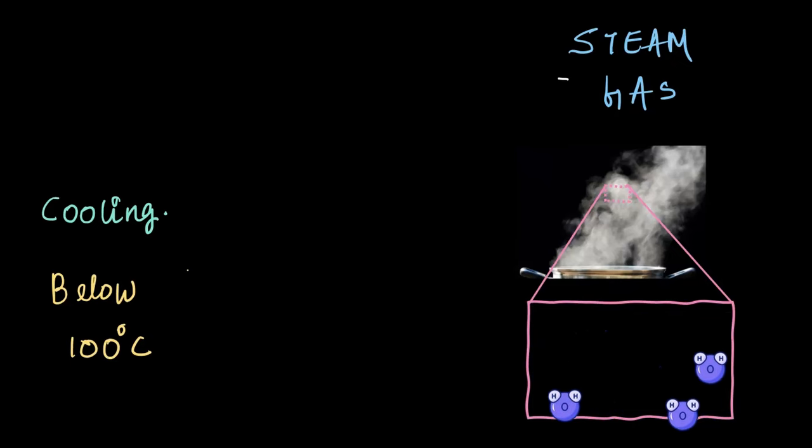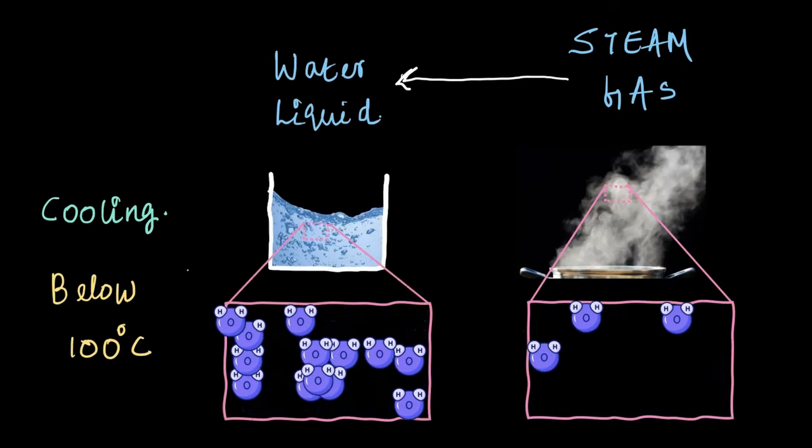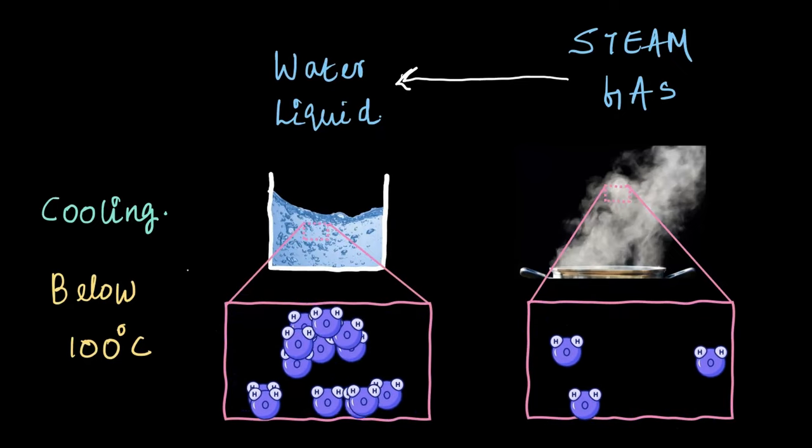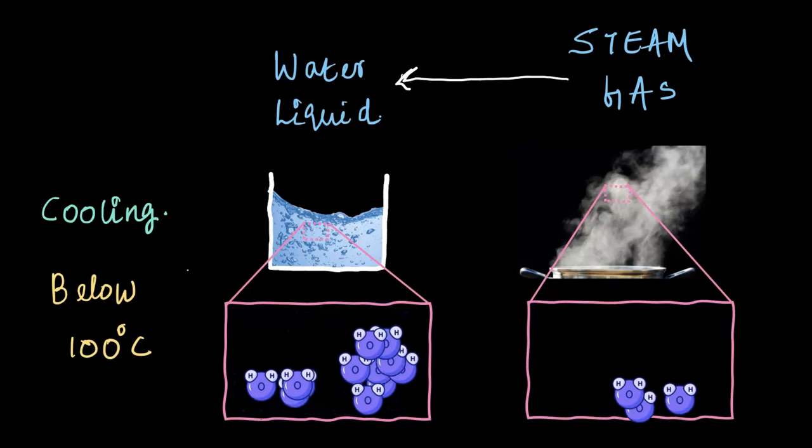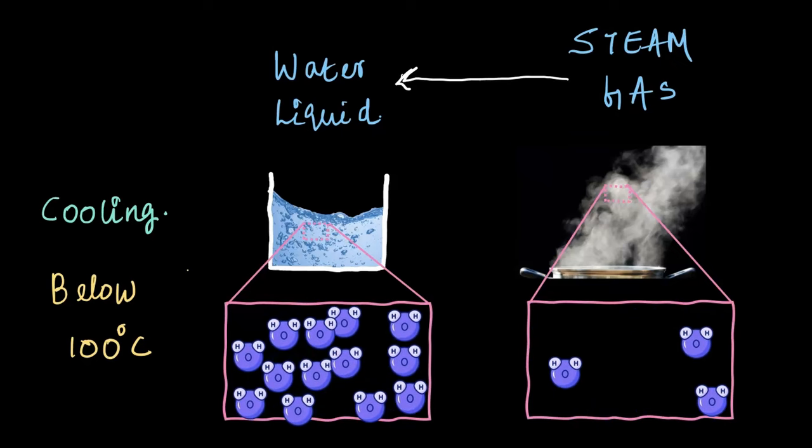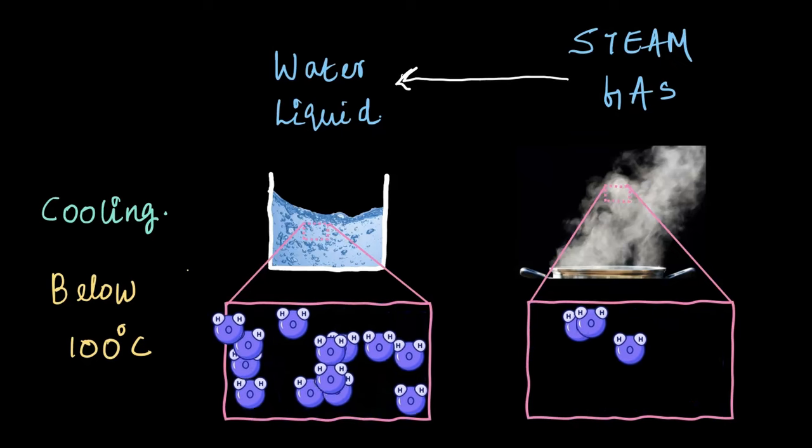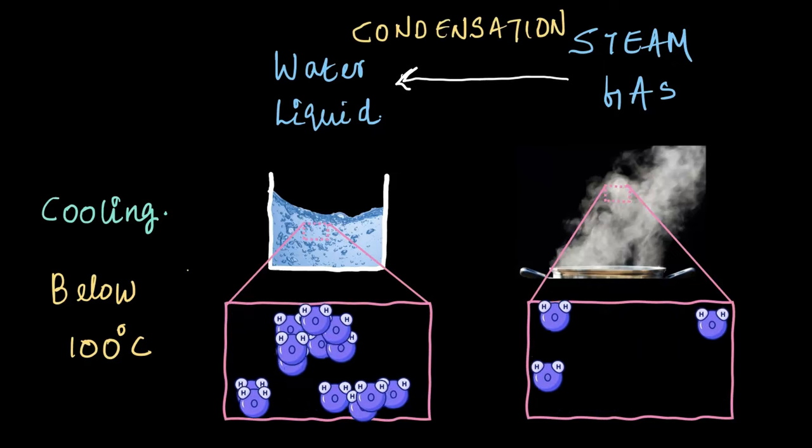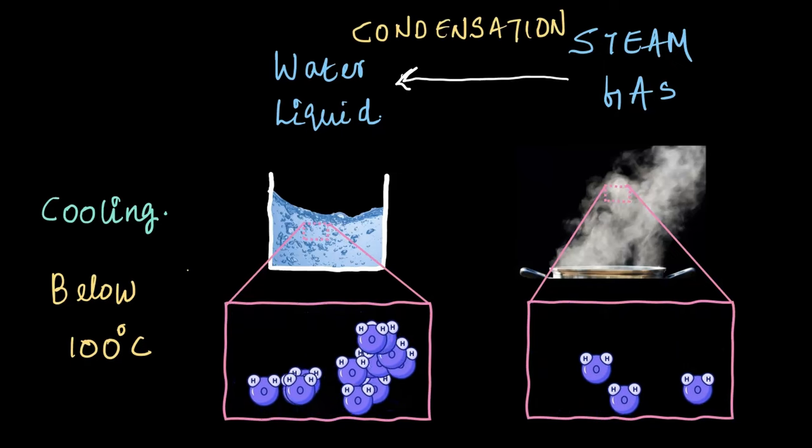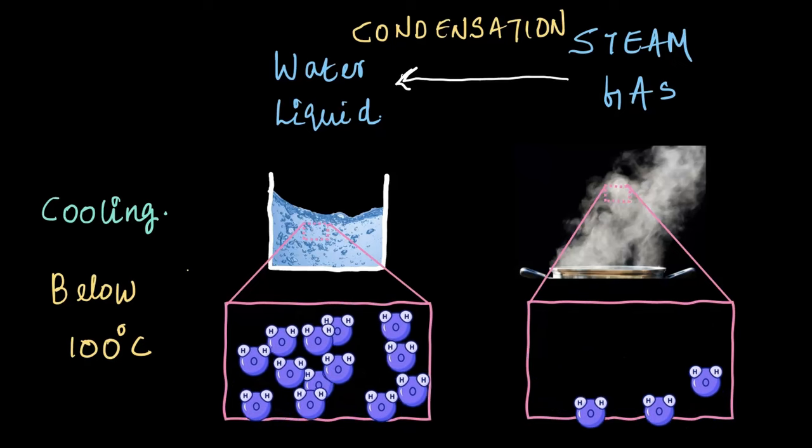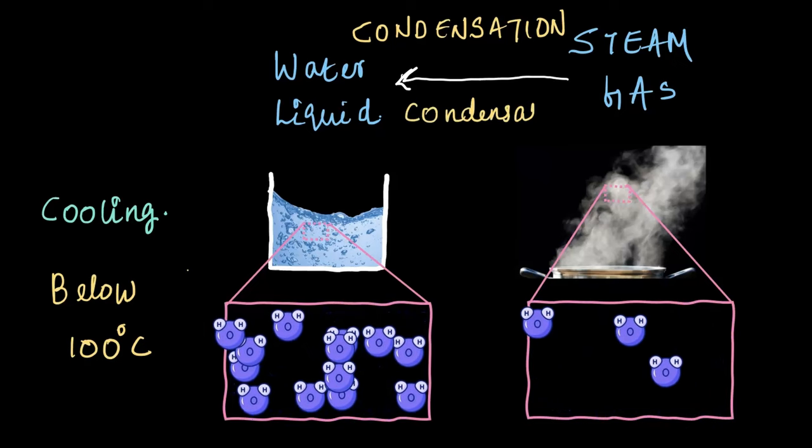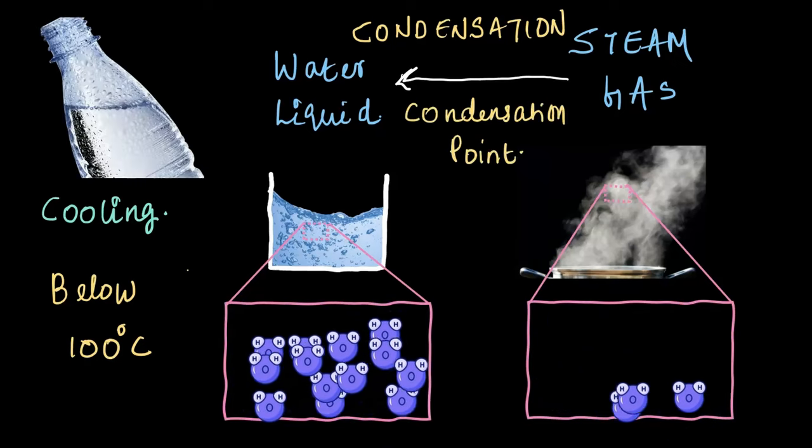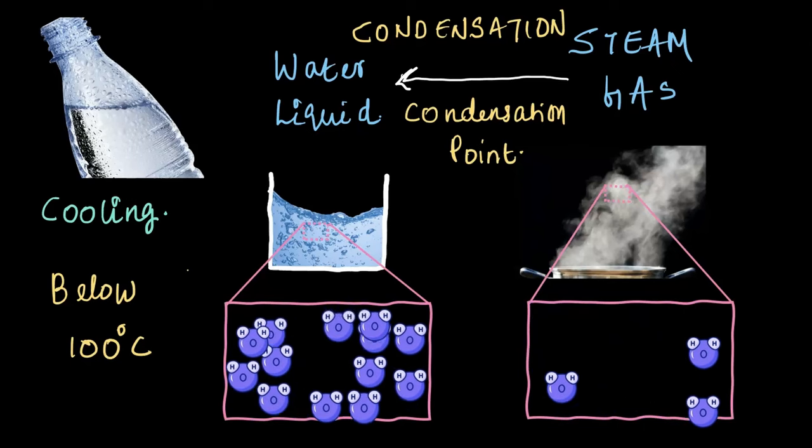Once the temperature drops below 100 degrees Celsius, the particles begin to come closer, moving less freely. And guess what? The state of water has changed from gas back to liquid. The steam has transformed into liquid water. This process where gas turns back into liquid is called condensation.